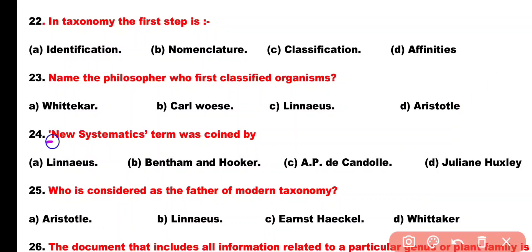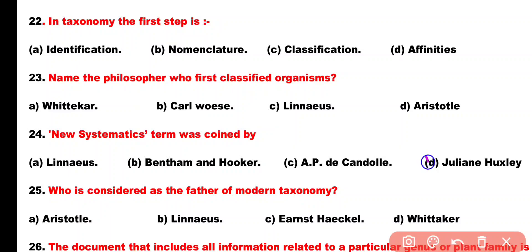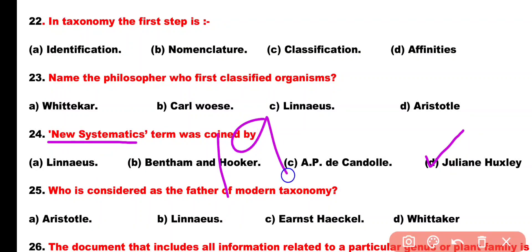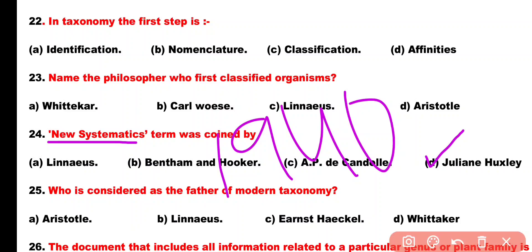Question number 24. The term 'New Systematics' was given by: Option A: Linnaeus, Option B: Bentham and Hooker, Option C: A.P. de Candolle, Option D: Julian Huxley. Correct answer is Option D. The term 'New Systematics' was coined by Julian Huxley in 1940.